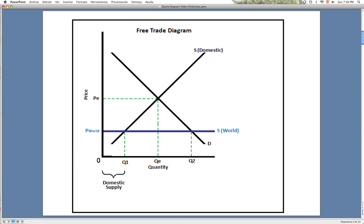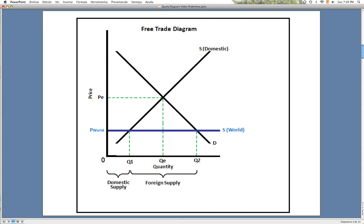Before the quota is imposed, the domestic supply is from 0 to Q1 at price world, and the foreign supply is from Q1 to Q2, also at price world, as you can see on the diagram.